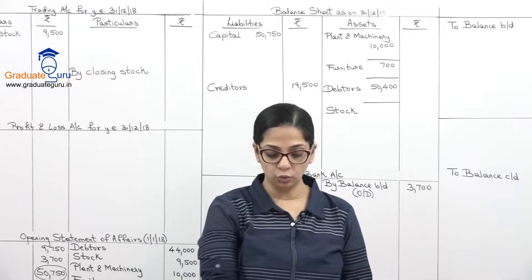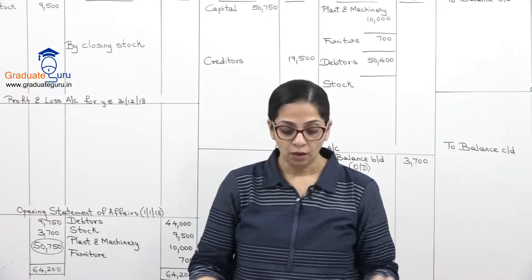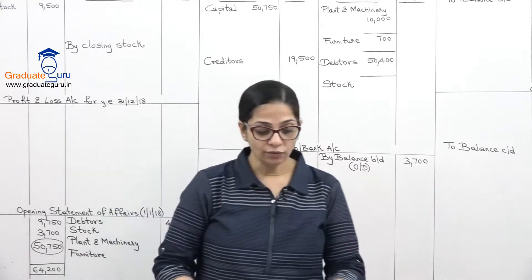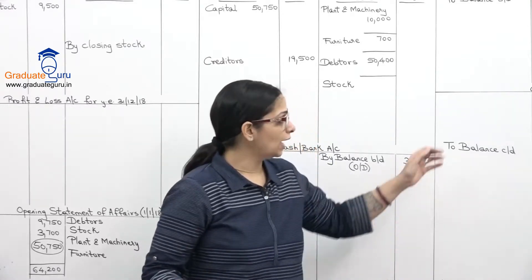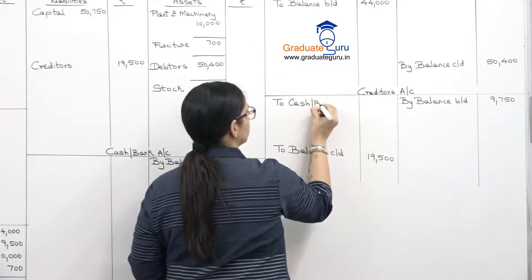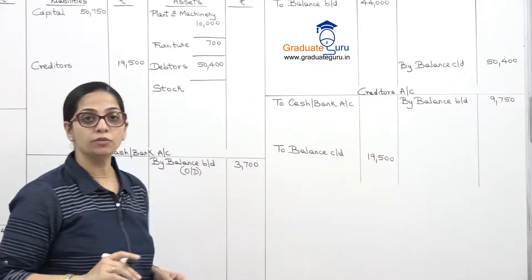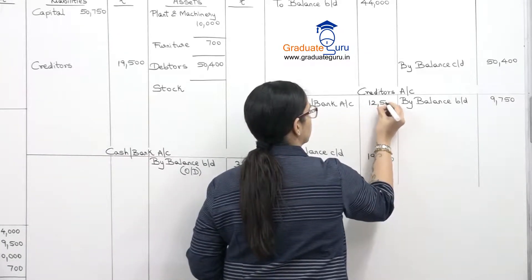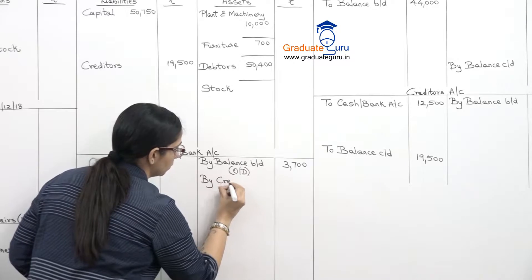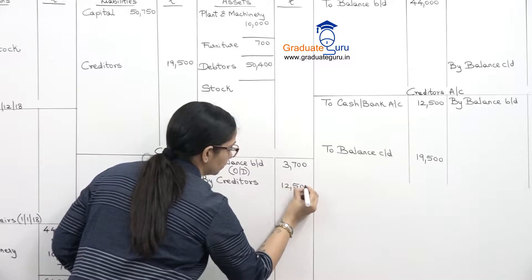Now we process cash book transactions. Bank overdraft was already recorded. Payment to creditors: debit creditors account, credit cash bank account with 12,500. Second effect in cash bank account — by creditors 12,500.